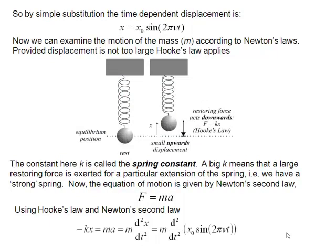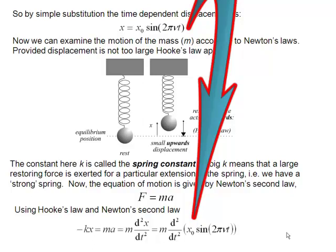But we can also relate force to Newton's second law of motion. Force is equal to the mass times the acceleration. So our force is minus kx. That's the Hooke's law force. But the acceleration is the second differential of the displacement with respect to time. Also comes from Newton's second law of motion. But we've got an expression for the displacement up here. So to make progress, what we now have to do is differentiate this function twice.